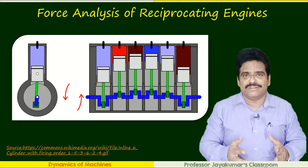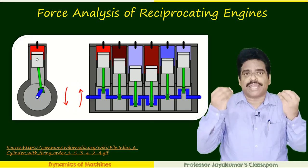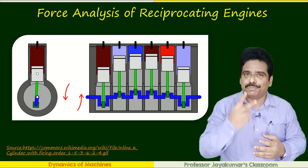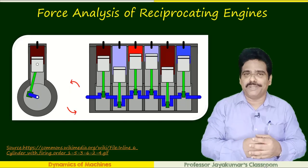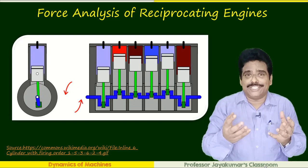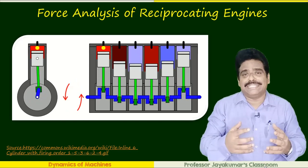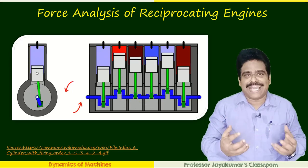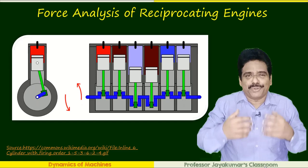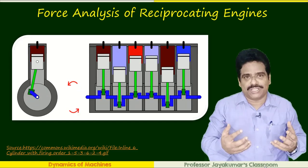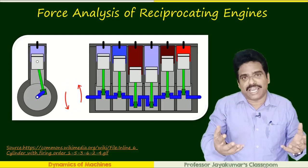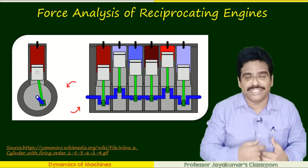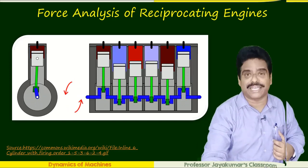We know that various forces are acting in a reciprocating engine. The two predominant moving parts of a reciprocating engine are the piston and the connecting rod. When both have mass and acceleration, they will produce inertia force and inertia torque. We will be considering everything in our dynamic force analysis study.